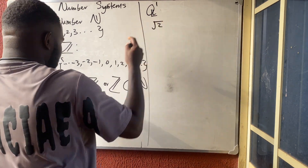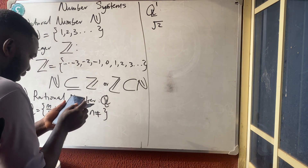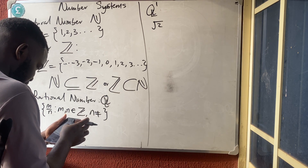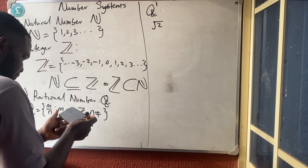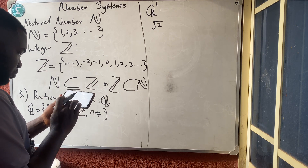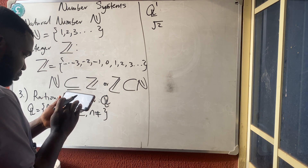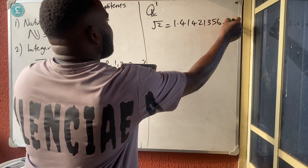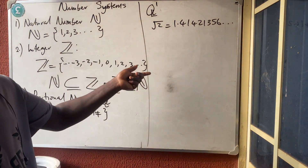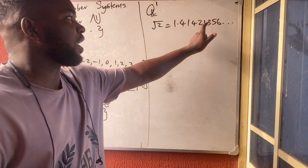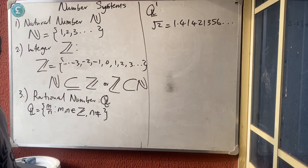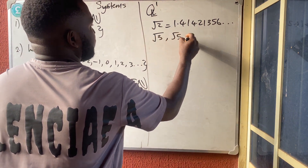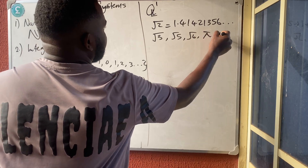For example, if you press root 2 on a calculator, root 2 is an irrational number. Root 2 gives 1.41421356... and it continues without a particular pattern — the digits are a mixture with no repeating sequence and no end. So root 2 is an irrational number. Similarly, root 3, root 5, root 6, and pi are all irrational numbers.